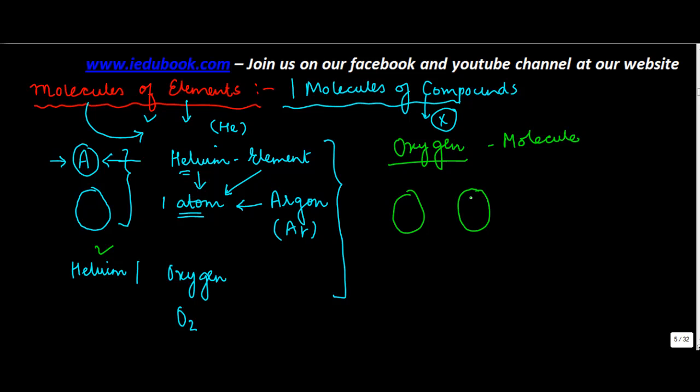So you have atom one and you have atom two. So when atom one combines with atom two, what is formed is a molecule which is referred to as O2.